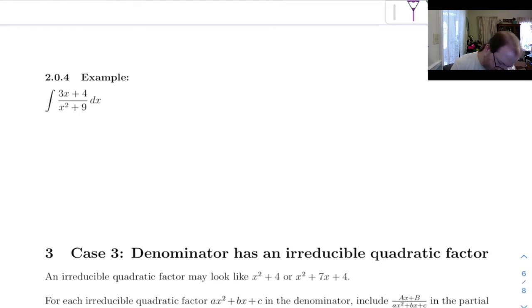Notice our denominator here is a quadratic, but we can't factor it because it's x squared plus 9. So what we have to do with this one is break it up like this. We can break it into 3x over x squared plus 9 plus 4 over x squared plus 9.